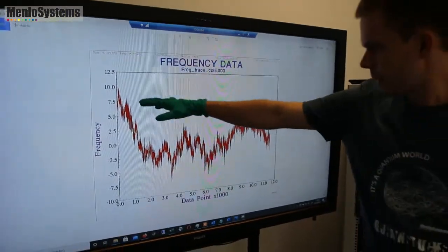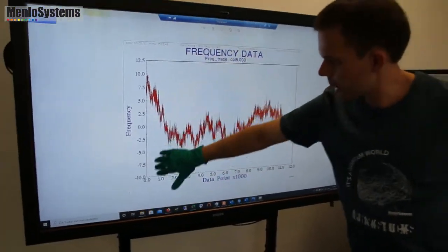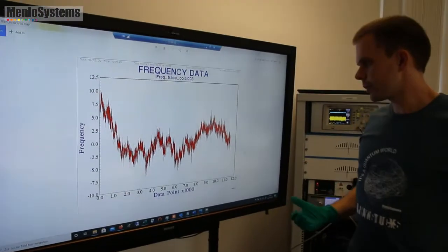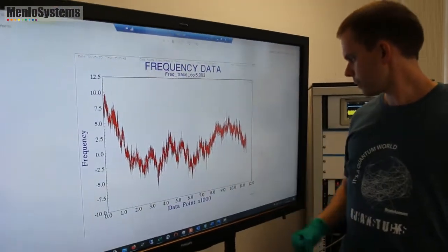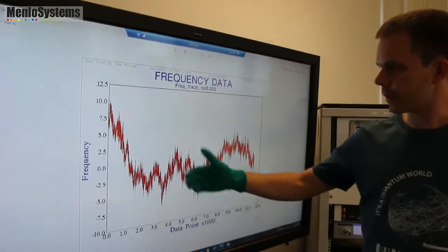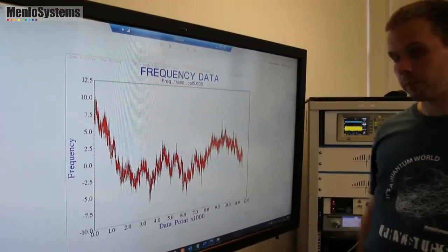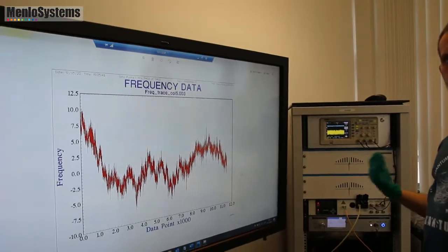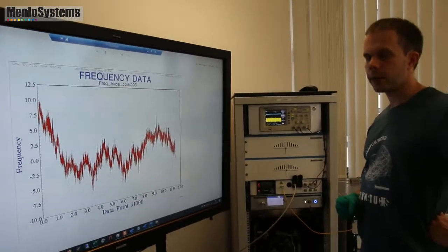And then you see here. So here on this scale we have frequency fluctuations in hertz. And you see over like 1,200 seconds you have a peak to peak fluctuation of maybe 15 hertz. So on a 200 terahertz carrier.